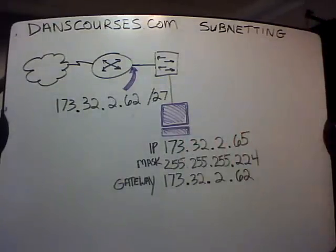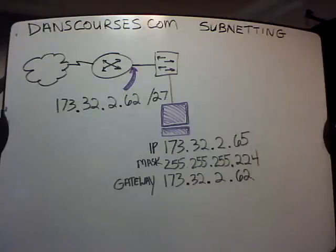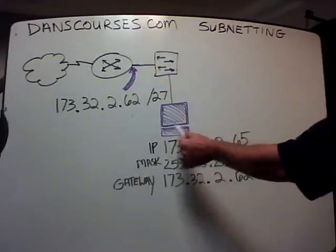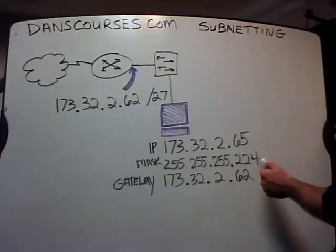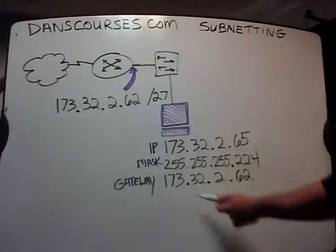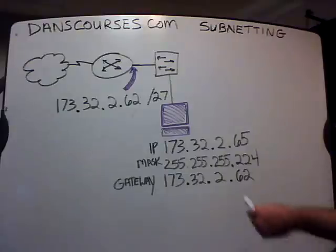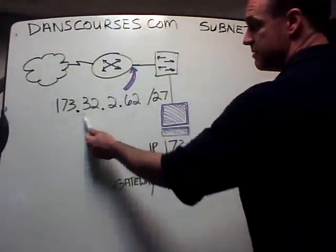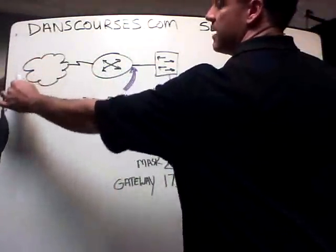Computer A cannot get to the Internet. So here's computer A over here — he cannot get to the Internet. What's the problem? What is incorrect? The answers usually are: incorrect IP address, wrong networks, bad subnet mask, incorrect gateway. So let's analyze this problem. We've got a computer with an IP address, a subnet mask, and a gateway address. This computer's been completely configured. It's connected to a switch, which is connected to a router, and on this router interface is the IP address configured. On the other side of the router is the cloud representing the Internet.